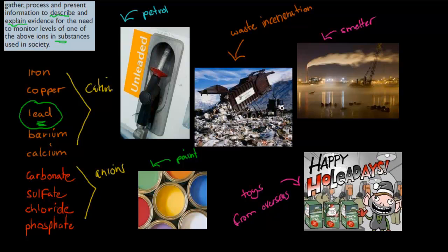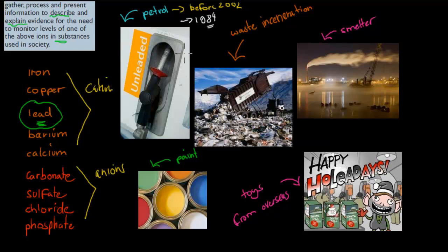The five main areas that lead comes from — though there are other areas as well — the first is petrol, especially before 2002. In 1984 they started to phase out using lead in petrol, which is why it's now called unleaded petrol. By 2002 it was completely banned, so they were starting to remove it by 1984, but by 2002 it was completely banned.